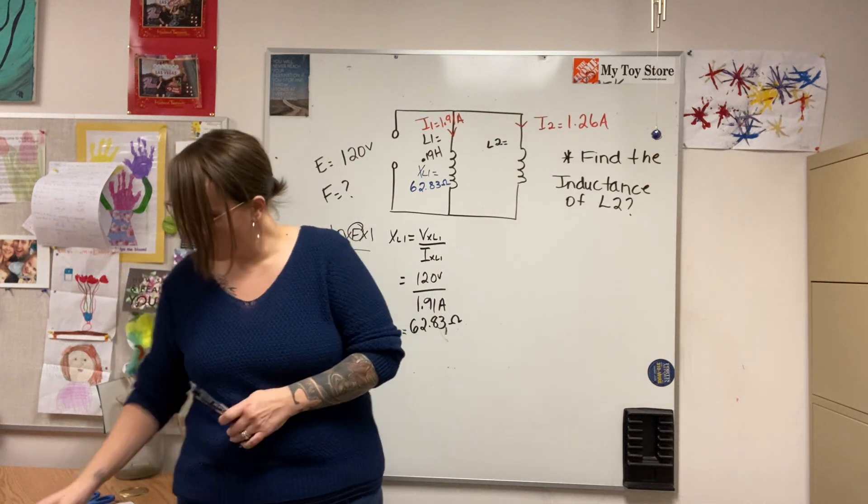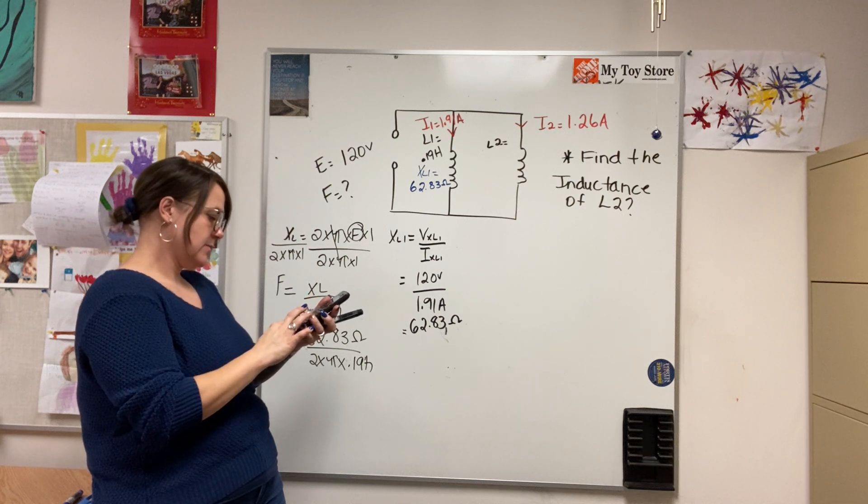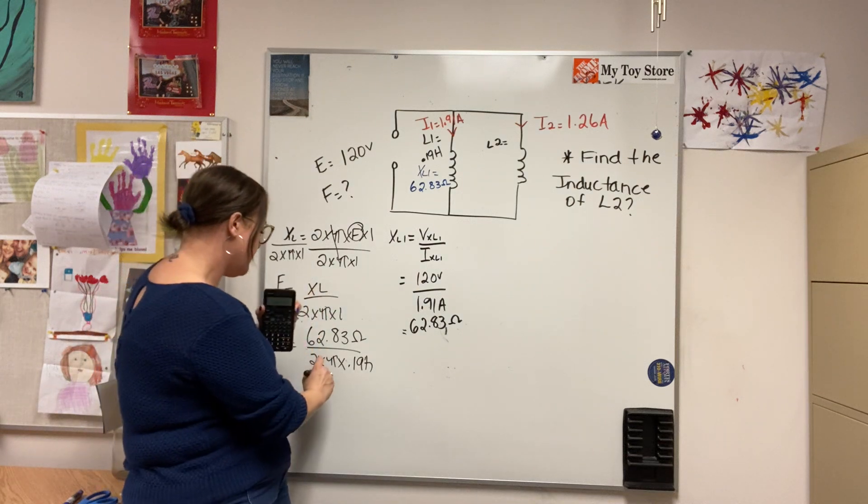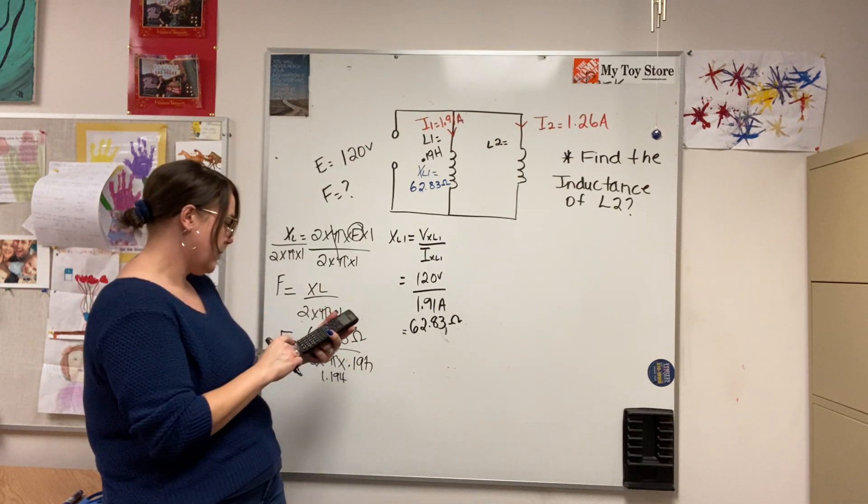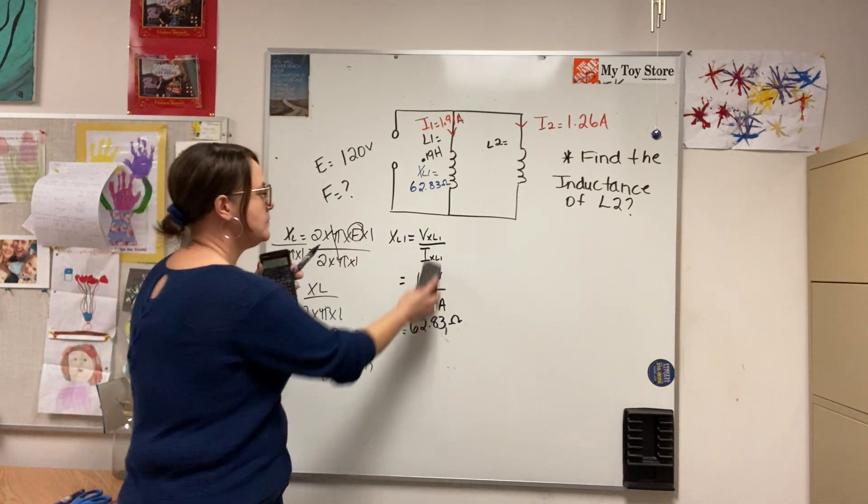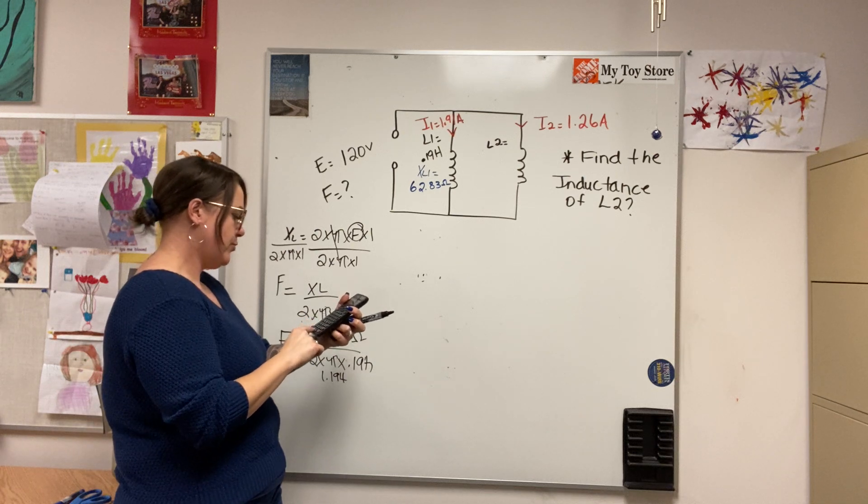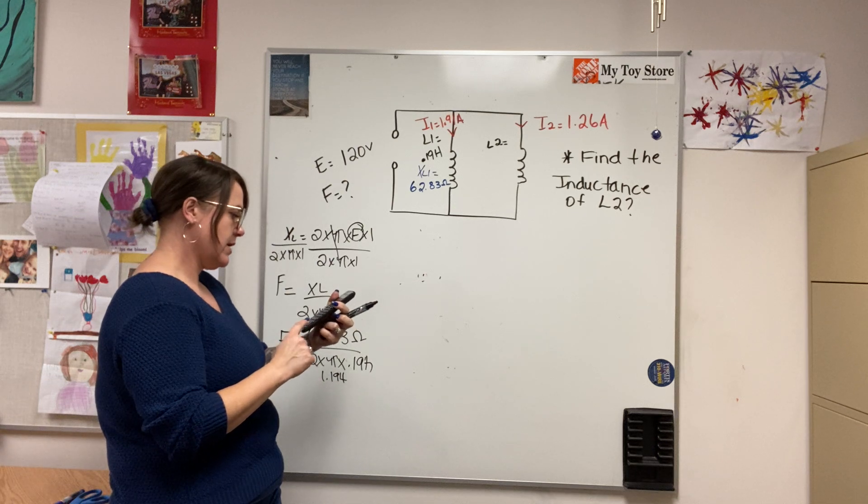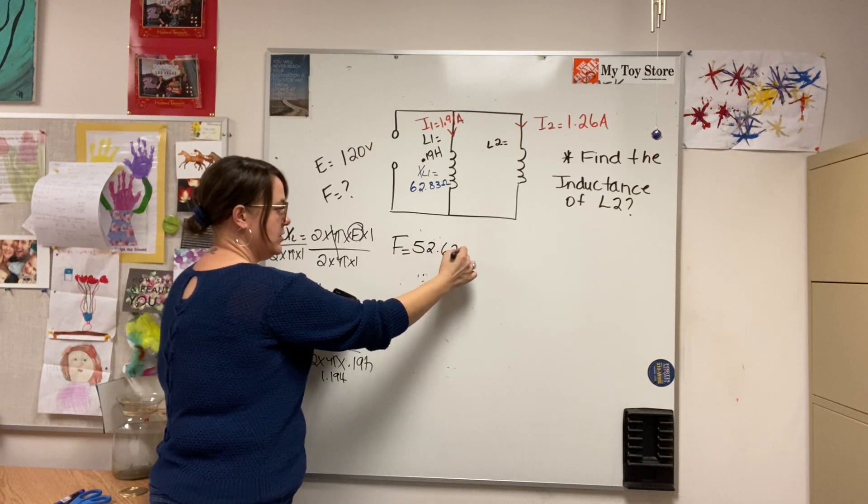And that will give me, so for my bottom, 2 times pi times 0.19 equals 1.194. So 62.83 divided by 1.194 will give me my frequency. 62.83 divided by 1.194 equals frequency of 52.62 hertz.